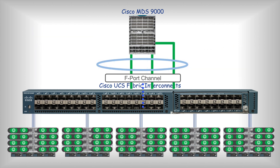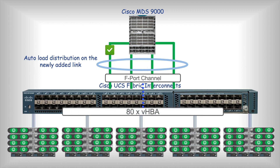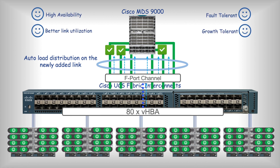When the server is pinned to an uplink, it's pinned to a port channel uplink. Some flows use one physical link and other flows use another physical link, giving you basic server load balancing across multiple fiber channel uplinks. One server has access to all the bandwidth in the port channel, not just one physical link.